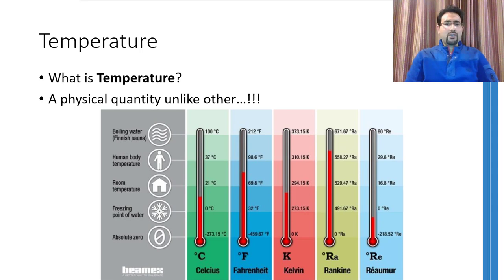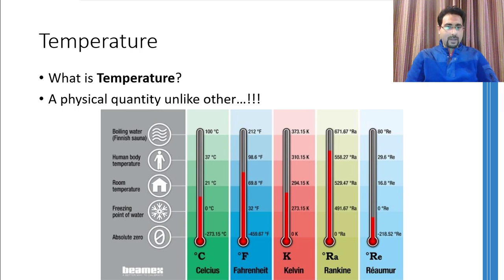The absolute zero temperature means that the body doesn't have any heat energy in it. At absolute zero temperature, the movement of molecules of any object will cease. Hence, if there is any movement, it means there is some kinetic energy in the molecules of that body. On the Kelvin scale, zero temperature means absolute zero, whereas on the centigrade scale, minus 273.15 degrees centigrade is the absolute zero.